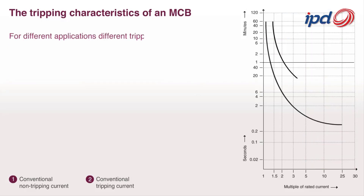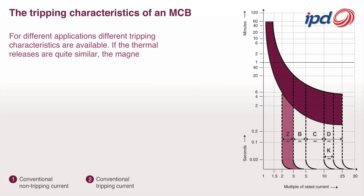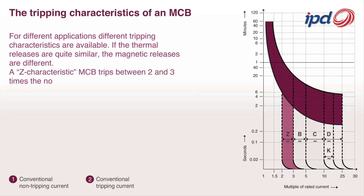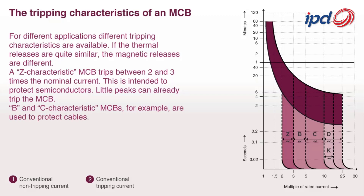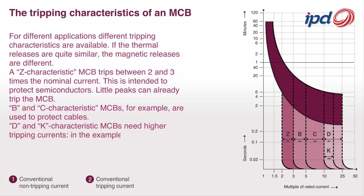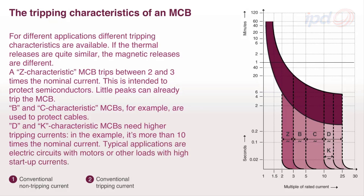For different applications, different tripping characteristics are available. While the thermal releases are quite similar, the magnetic releases are different. A Z characteristic MCB trips between 2 and 3 times the nominal current — this is intended to protect semiconductors, as little peaks can already trip the MCB. B and C characteristic MCBs are used to protect cables. D and K characteristic MCBs need higher tripping currents — in the example, more than 10 times the nominal current. Typical applications are electric circuits with motors or other loads with high start-up currents.